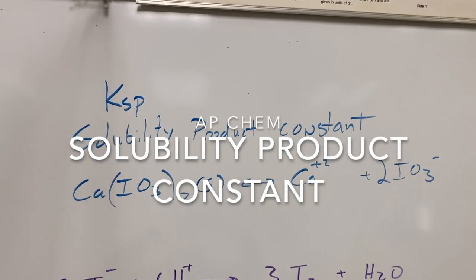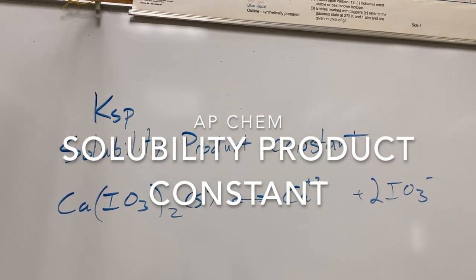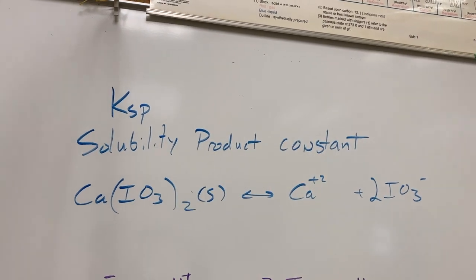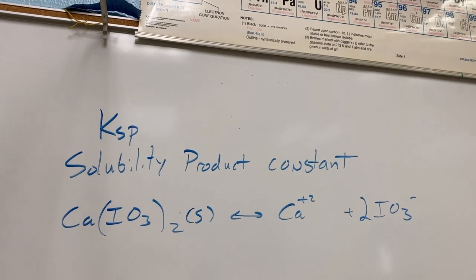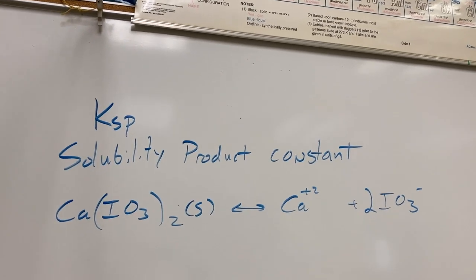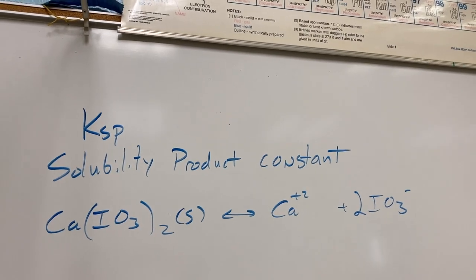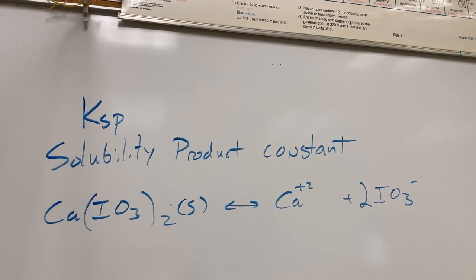In today's lab we're going to experimentally determine the solubility product constant, or Ksp value, for calcium iodate. The calcium iodate solution that we are using is saturated, so based on the fact that it contains the highest concentration possible of the iodate, we're going to react the iodate and track the molarity of the moles and eventually the Ksp.